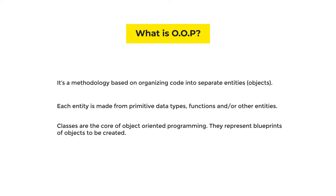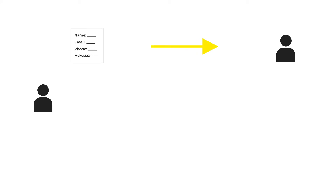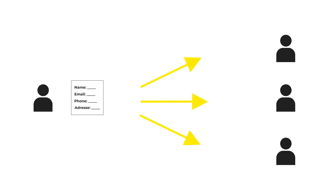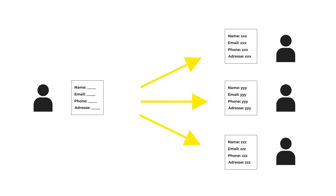You can think of a class as a blueprint of an object because it determines every property and function that belongs to that object. Here's an example: suppose you have a business that requires your customers to fill a form. Each one of those forms has the exact same fields for every client. So instead of creating a new form for each client, you would save the form in a file and print a copy every time you make a deal with a new client. That original form saved in a file is the class in OOP, while each filled form by a client is an object, also referred to as an instance of that class.